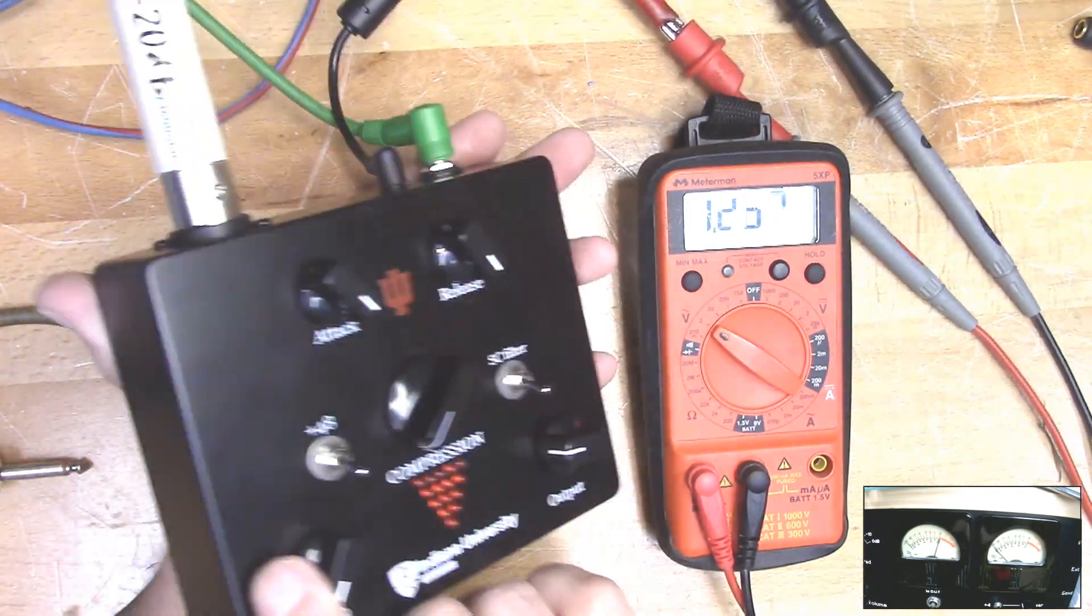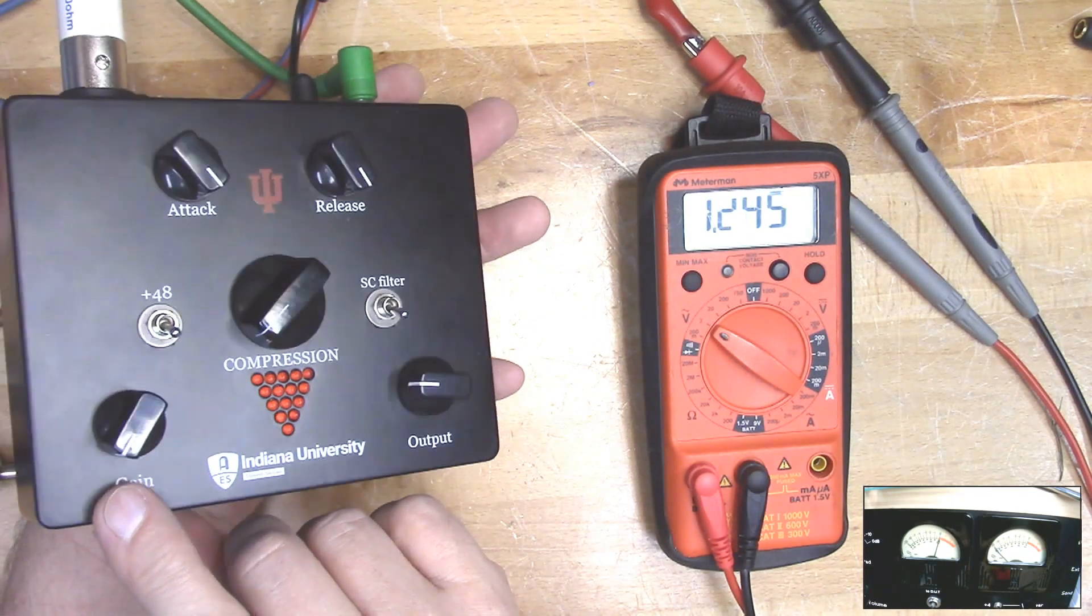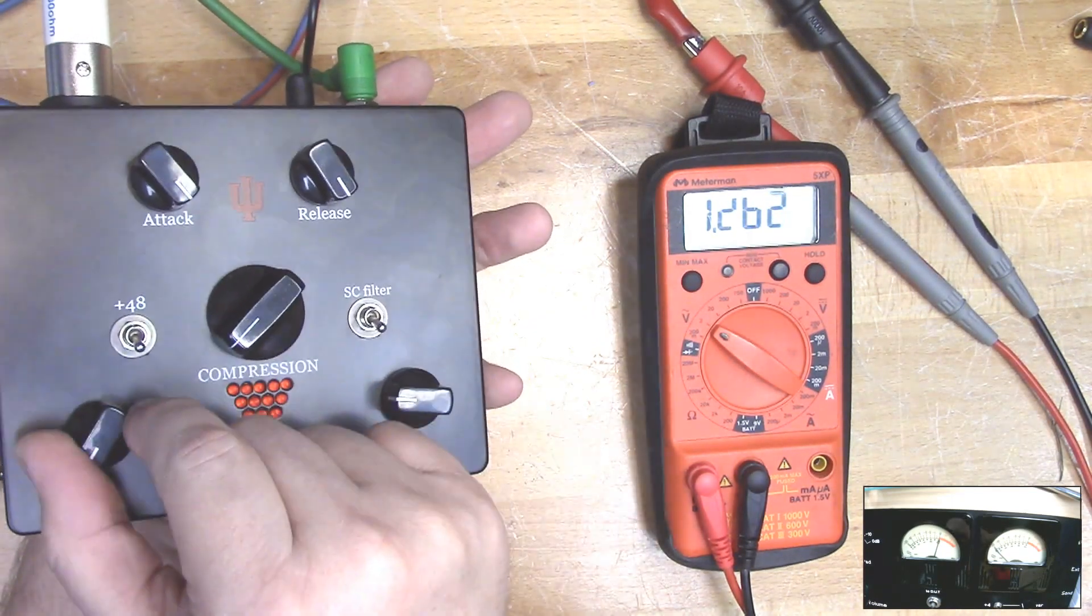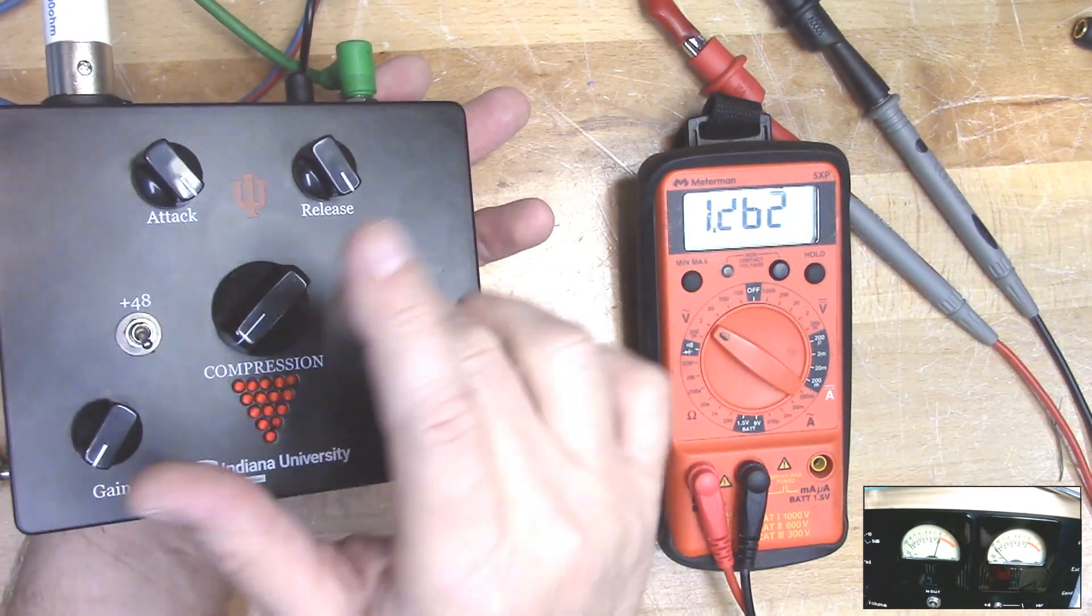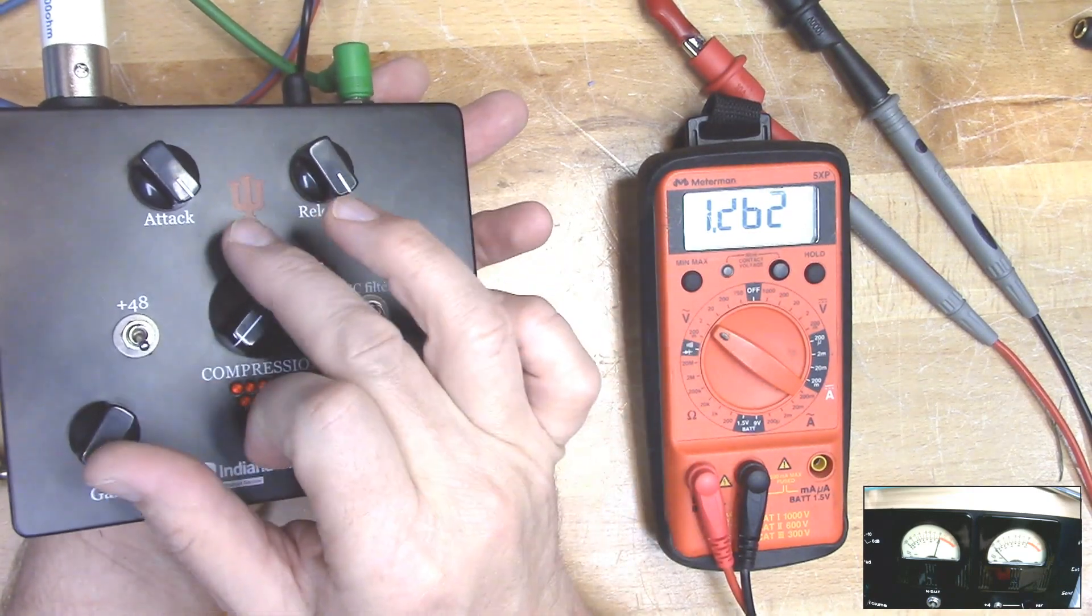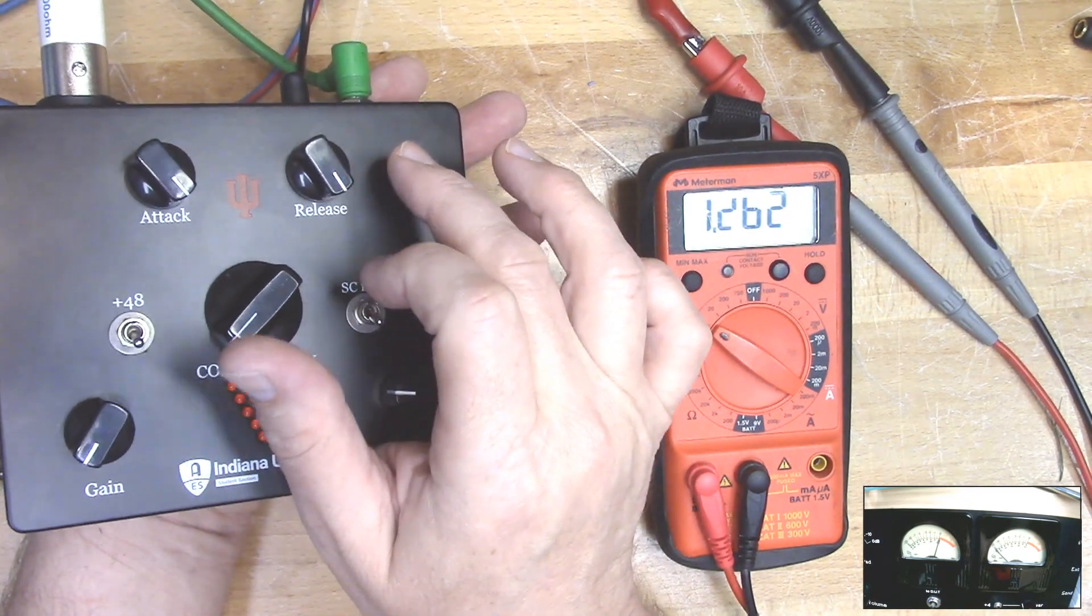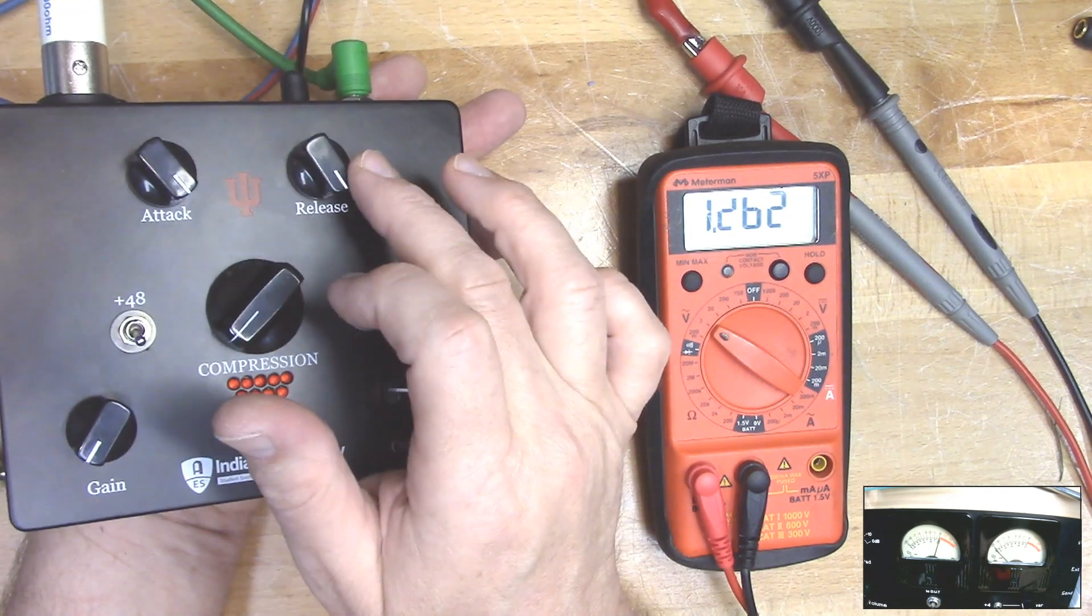So to start off with, go ahead and set it up with gain all the way down, phantom off, sidechain filter off, compression all the way down, attack and release all the way to the fastest, which is the farthest clockwise.